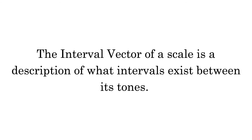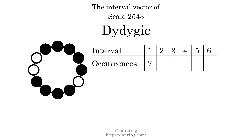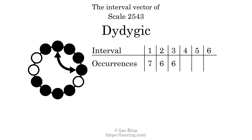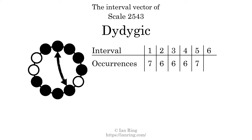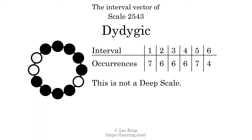The interval vector of a scale is a description of what intervals exist between its tones. There are 7 intervals of 1 semitone, 6 intervals of 2 semitones, 6 intervals of 3 semitones, 6 intervals of 4 semitones, 7 intervals of 5 semitones, and 4 intervals of 6 semitones. Each interval does not appear a unique number of times, so this is not a deep scale.